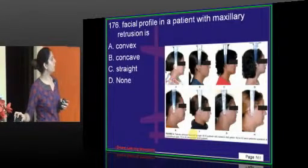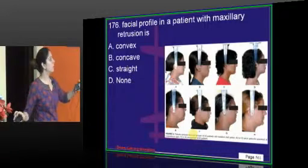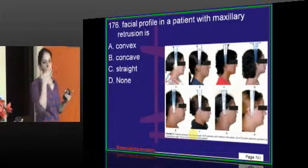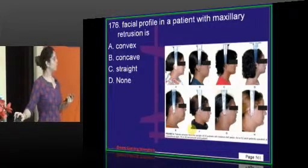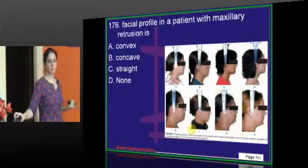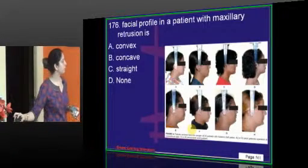The facial profile in a patient with maxillary retrusion is concave. Maxillary retrusion means Class 3, and the facial profile is concave.